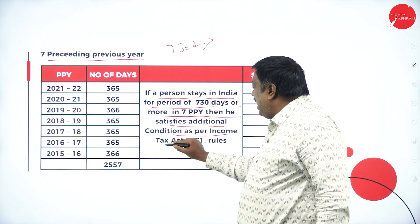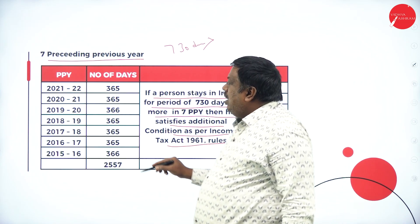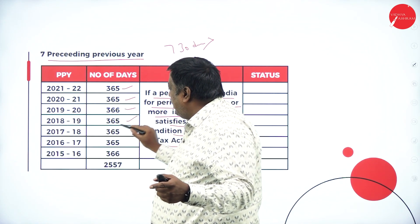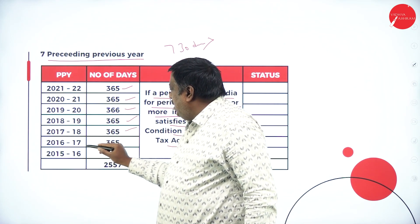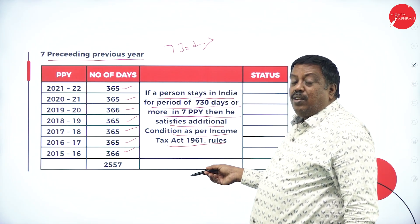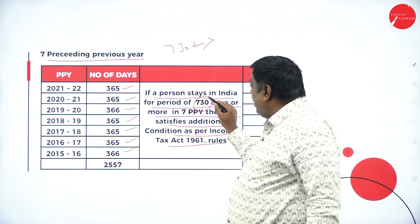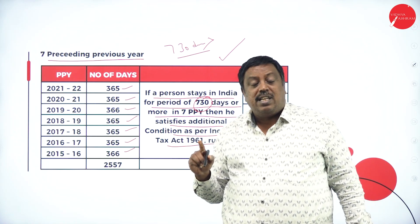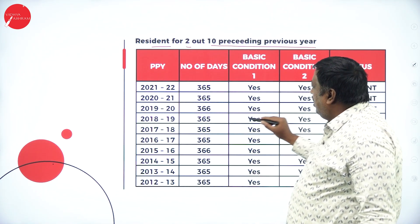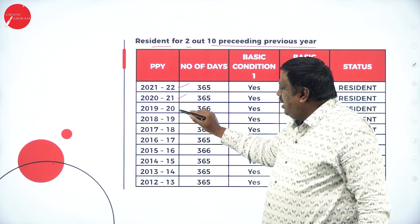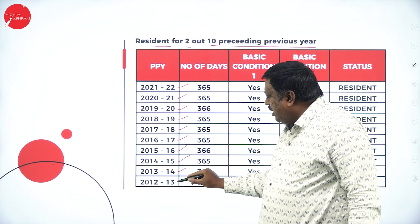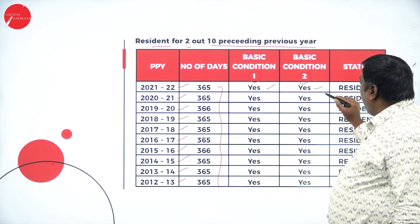For additional condition one, my stay in India in seven preceding previous years should be 730 days or more. The years are 2021-22 (365), 2020-21 (365), 2019-20 leap year (366), 2018-19 (365), 2017-18 (365), 2016-17 (365), 2015-16 leap year (366), giving a total of 2,557 days. If my stay is 730 days or more out of these 2,557 days, I've satisfied the first additional condition.